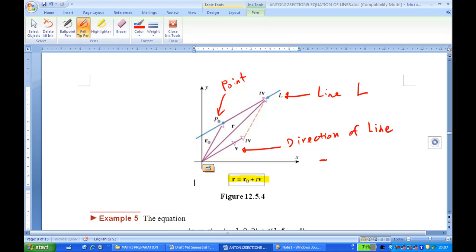T is the parameter. And this is the vector equation of the line: r = r0 + tV is the vector equation of the line.